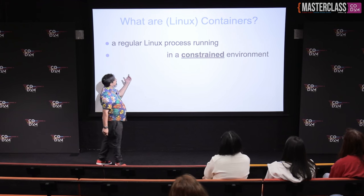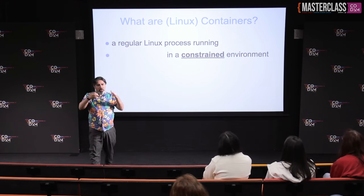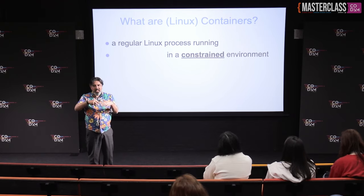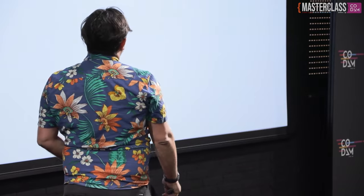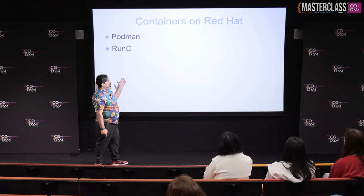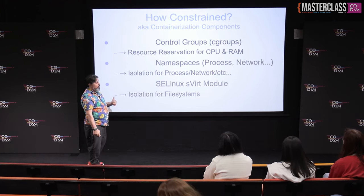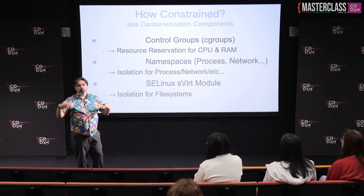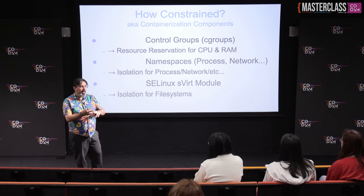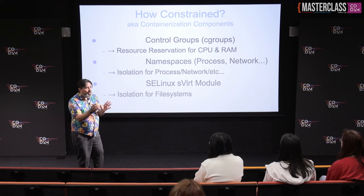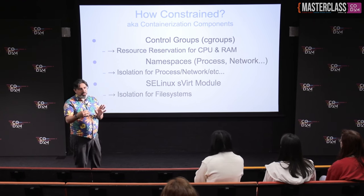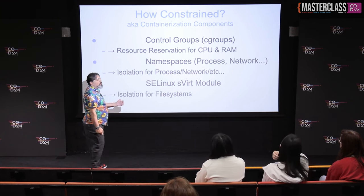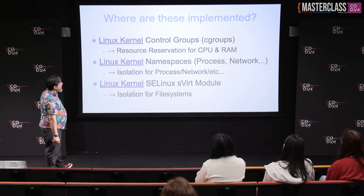So what are containers? Linux processes running in constrained environments. From the point of view of the process, the world ends at the boundaries set by the Linux kernel, which may or may not be the actual physical boundaries — it's something the Linux kernel imposes on the process. Constraints are containers — control groups, namespaces. There's a network namespace: if you are not in a network namespace, you can see everything from the host. But if you are in a network namespace, you can only see your neighbors, your other processes in the namespace. It's a way to isolate networks for processes.